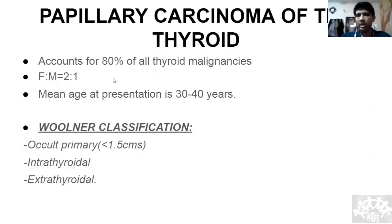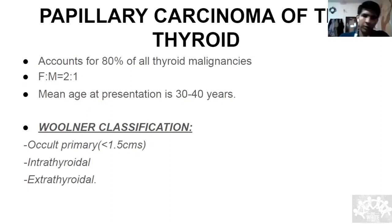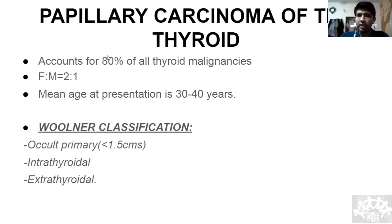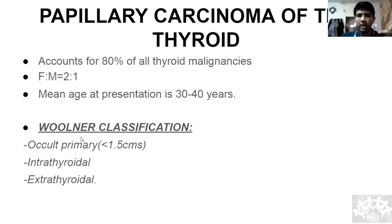Finally reaching the carcinomas. Papillary carcinoma of the thyroid arises from follicular cells and is a well-differentiated carcinoma — the most common, comprising 80% of all thyroid malignancies. More female preponderance, most common in the 30–40 age group. Using the Woolner classification: occult (picked up by chance, not clinically palpable), intrathyroidal (tumor restricted to the thyroid gland), and extrathyroidal (spread to lymphatics).